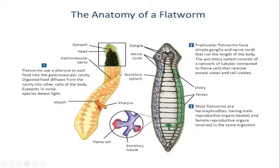The gastrovascular cavity is a long structure that opens through the pharynx and mouth. Flatworms use the pharynx to suck food into the gastrovascular cavity, from where digested food diffuses. Eye spots in some species detect light. Ganglions and a nerve cord act as the nervous system, sending and receiving messages.